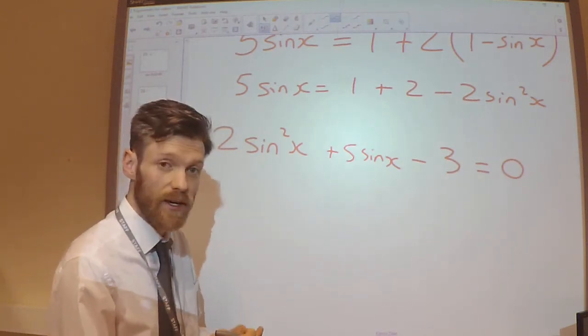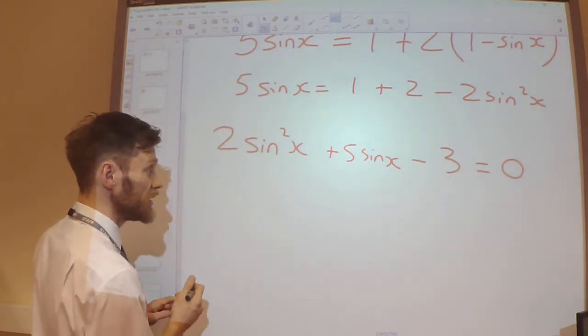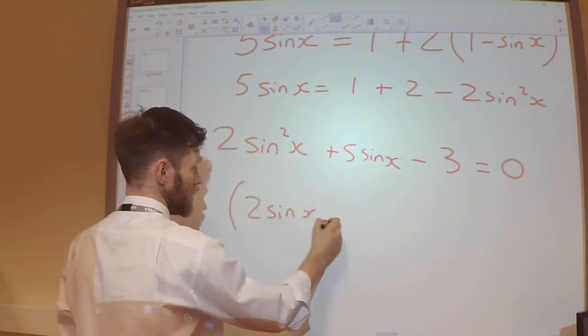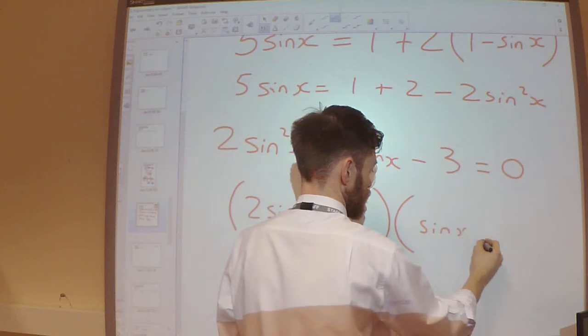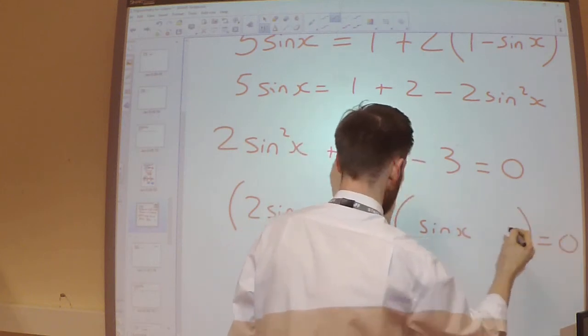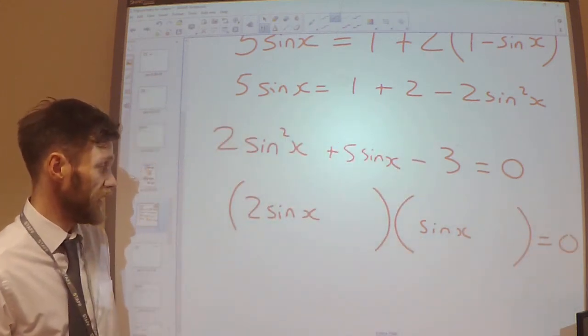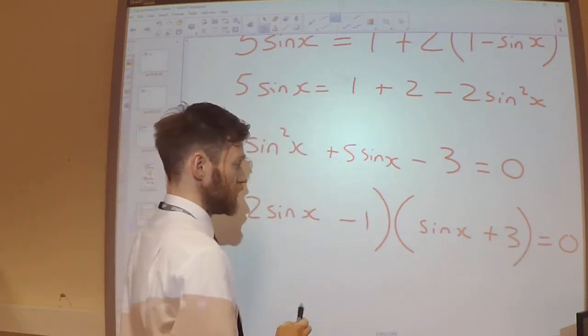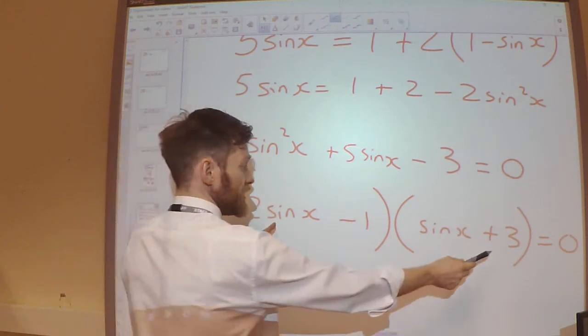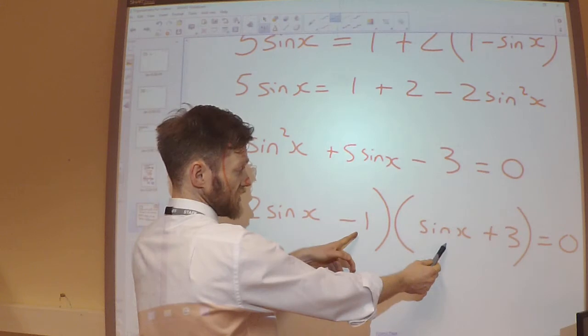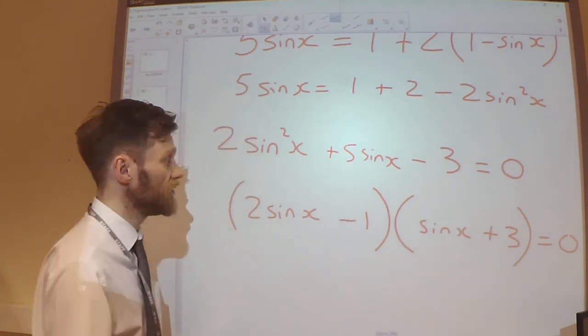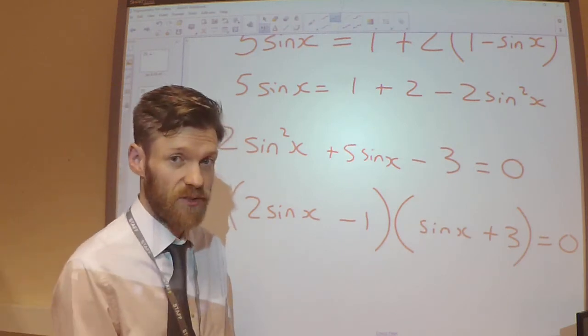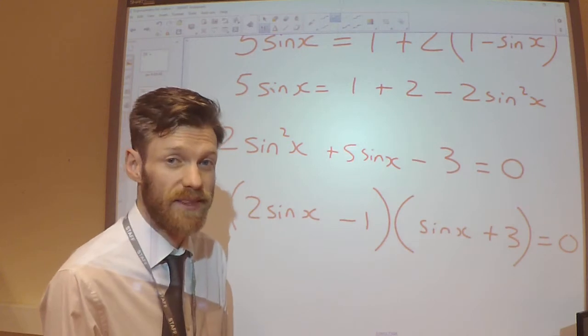Okay, right. We have a quadratic equation now. So we can factorise this, hopefully. Yeah, I think this factorises nicely. So we'll have... And we need... This is going to have to be a plus 3. And that's going to have to be a minus 1. Because that way, I'll have a 6 sin x and a minus sin x. So I will get the plus 5 sin x there. If it didn't factorise nicely, you'd just have to use the quadratic formula. Or you could complete the square.